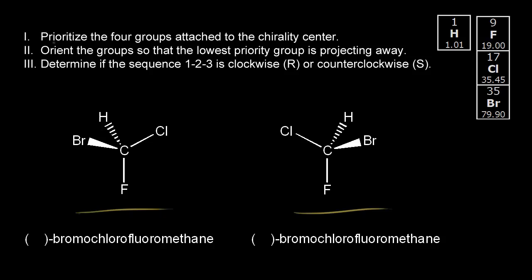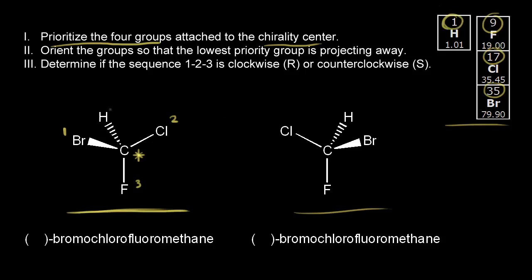In step one, we prioritize the four groups attached to our chiral center according to atomic number. Let's start with the enantiomer on the left. This carbon is our chiral center, and we have four different things attached to it. Looking at our periodic table, bromine has the highest atomic number, so bromine gets priority number one. Chlorine gets second highest priority, fluorine gets a three, and hydrogen is the lowest priority group with the lowest atomic number, so hydrogen gets a four.